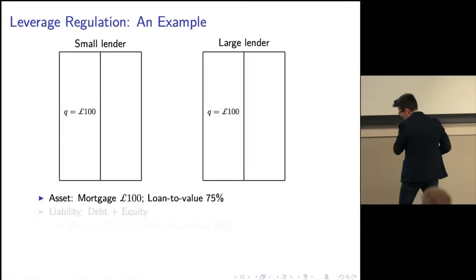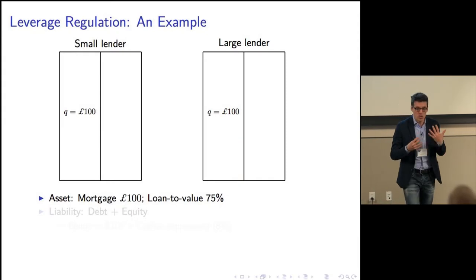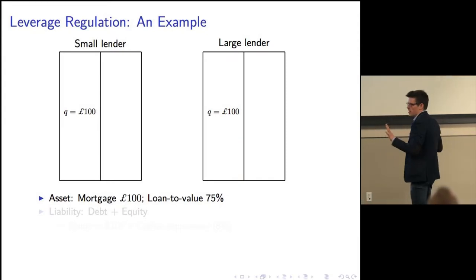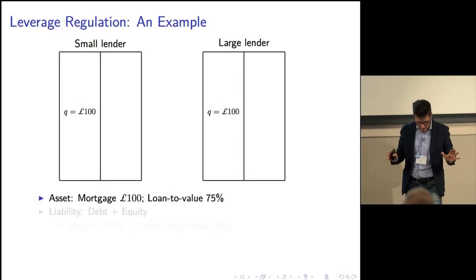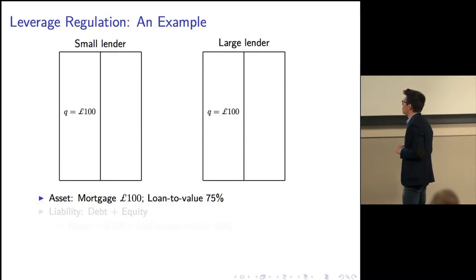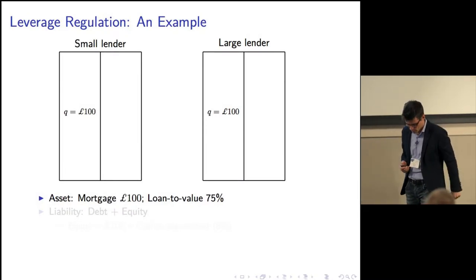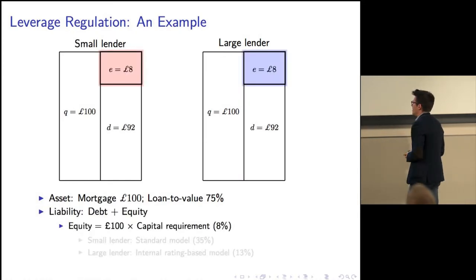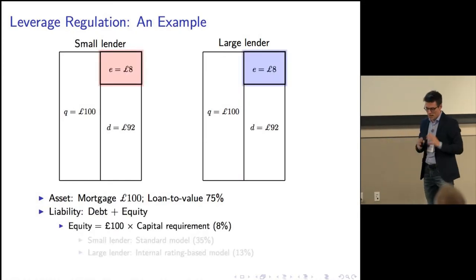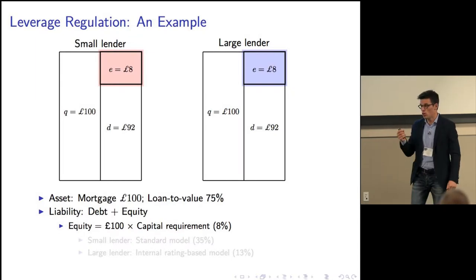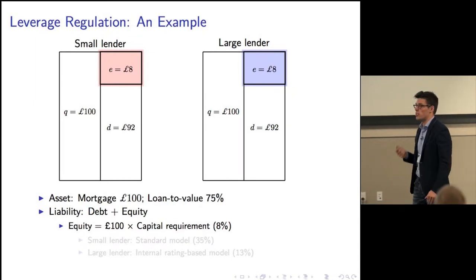Let me start with a very simple example, which is a variation I'm going to use throughout the talk. Take two lenders — a small lender and a big lender — making the same mortgage with a quantity of 100 pounds and a loan-to-value of 75 percent. They raise money to finance this product, and in a simple pre-crisis Basel 1 scenario, they collect 92 pounds of debt and are forced by the regulator to hold 8 pounds of equity, reflecting an 8 percent capital requirement.